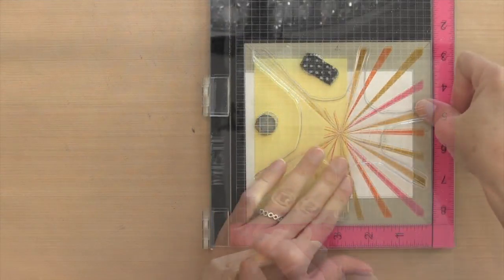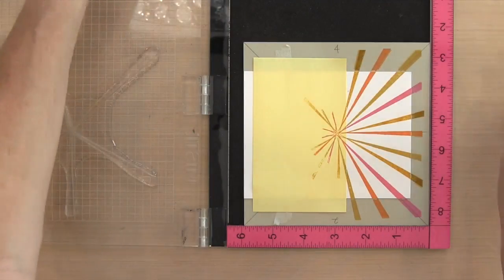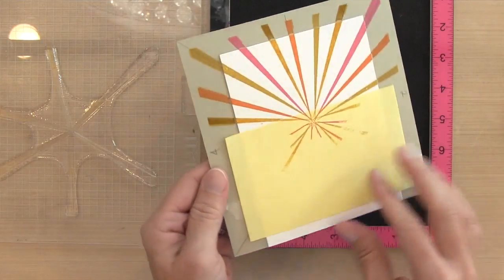And then finally for the last one in quadrant four, I'm using Daffodil Delight by Stampin' Up. So I just wanted to add more of a brighter yellow to the mix. And so anyway, that is it. So four impressions total with four different colors.